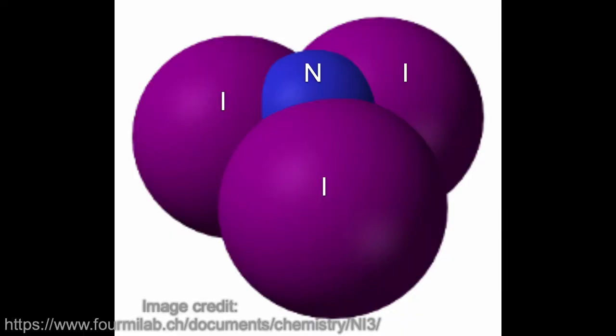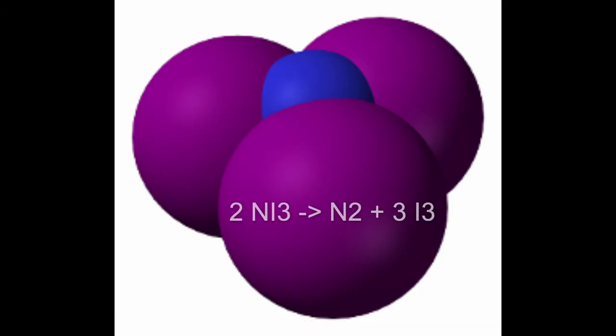Here is a model of nitrogen triiodide. Nitrogen triiodide is so unstable because the iodine atoms find it hard to bond with the nitrogen because they are so big in comparison. This results in an explosive decomposition reaction which creates nitrogen gas and iodine gas.